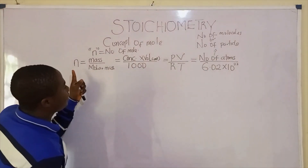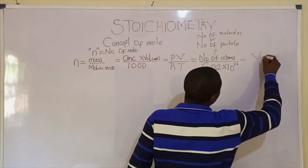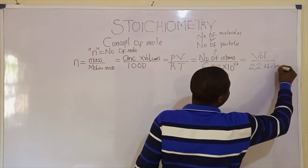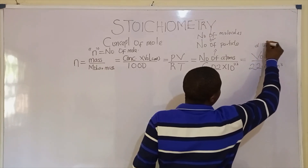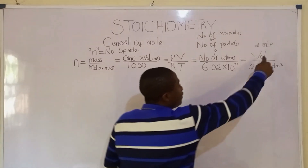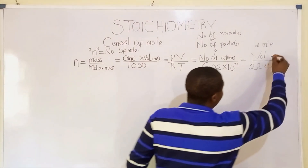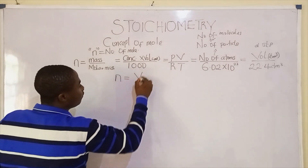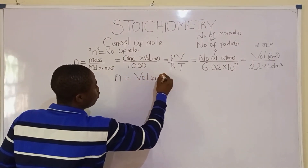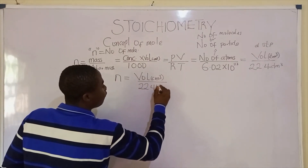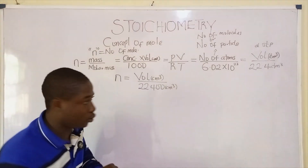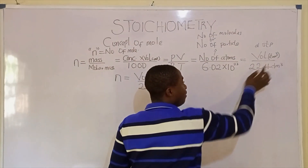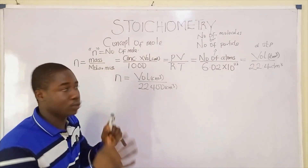Lastly, number of moles is given by volume at STP over 22.4 dm³. This volume must be in dm³. However, if the volume is given in cm³, you use volume over 22,400 cm³. It depends on how the question presents the units — it is just a conversion.